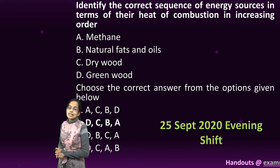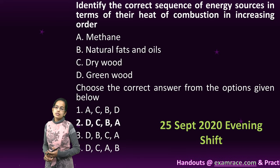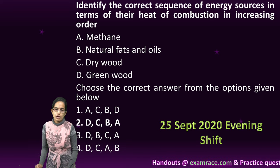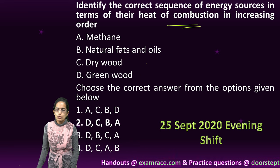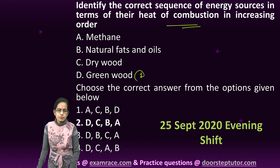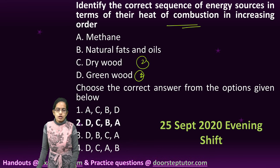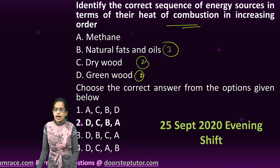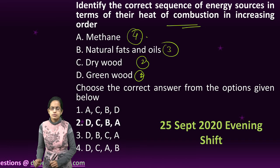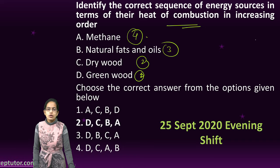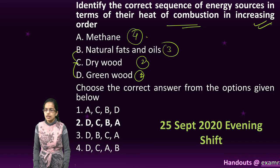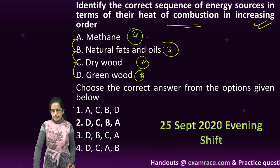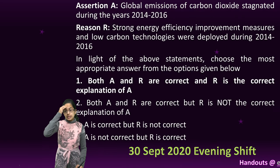The next question is the correct sequence of energy sources in terms of heat of combustion. Heat of combustion is lowest for greenwood, followed by drywood, followed by natural fats, and the highest heat of combustion is seen for methane. So in increasing order, the right sequence is: greenwood, drywood, natural fats and methane.